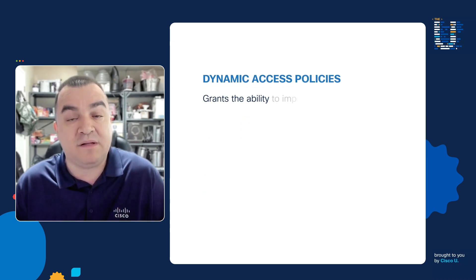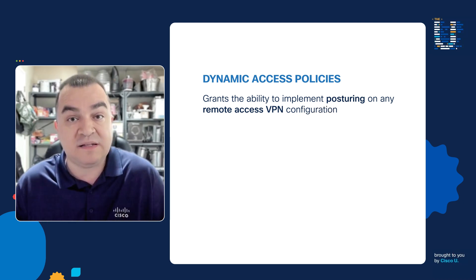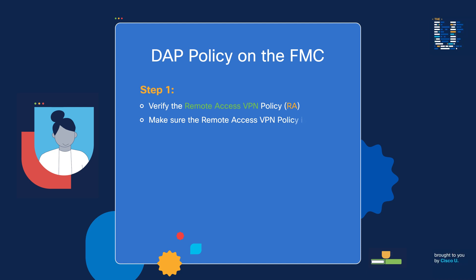So in order to make this possible, we're going to be using a configuration setting on the Firewall Management Center called the Dynamic Access Policies. This gives us the ability to implement posturing on any Remote Access VPN configuration. In order to implement a posturing policy using the Dynamic Access Policy configuration on the FMC, we need to follow three steps. The first step is that we're assuming you already have a working Remote Access VPN policy applied to the FMC.